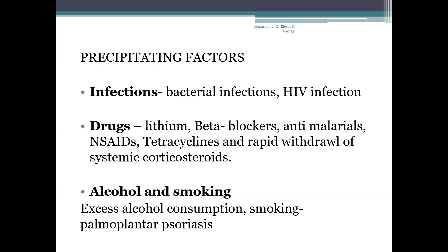Next are the precipitating factors or risk factors of psoriasis. The first one is infections — bacterial infections and HIV infection. Bacterial infections, particularly streptococcal pharyngitis, precede the onset of guttate psoriasis. HIV infection can aggravate psoriasis; the severity will be greater in patients with HIV infection.